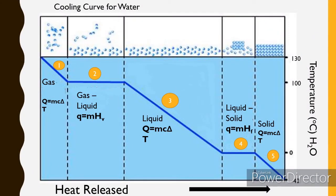On the cooling curve of water: water in gaseous state loses heat, temperature decreases, and kinetic energy decreases. Then there is a change in potential energy — potential energy decreases. In the gaseous state, we have the heat of vaporization and condensation. Next, the liquid state has a lower given heat energy compared to the gas state.